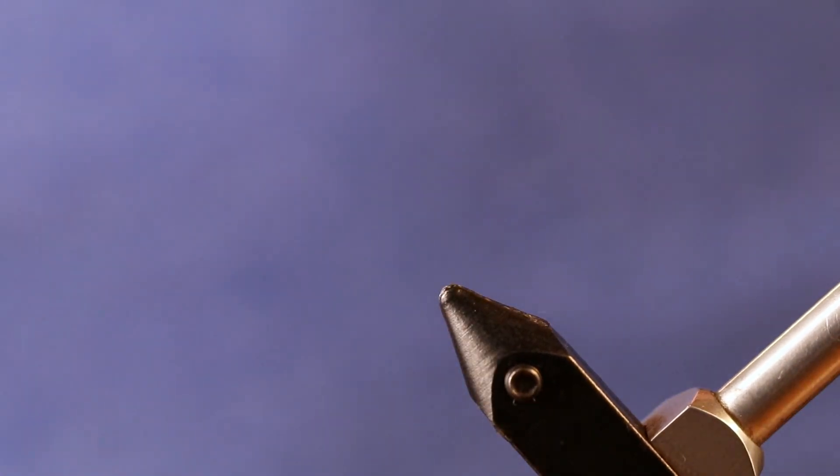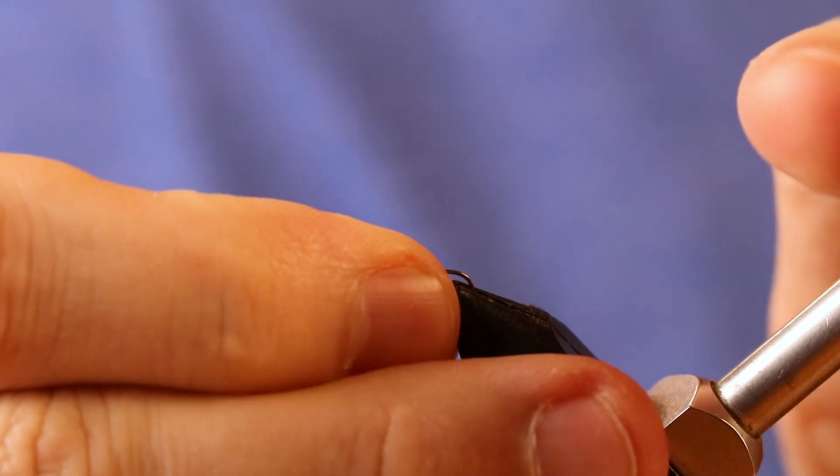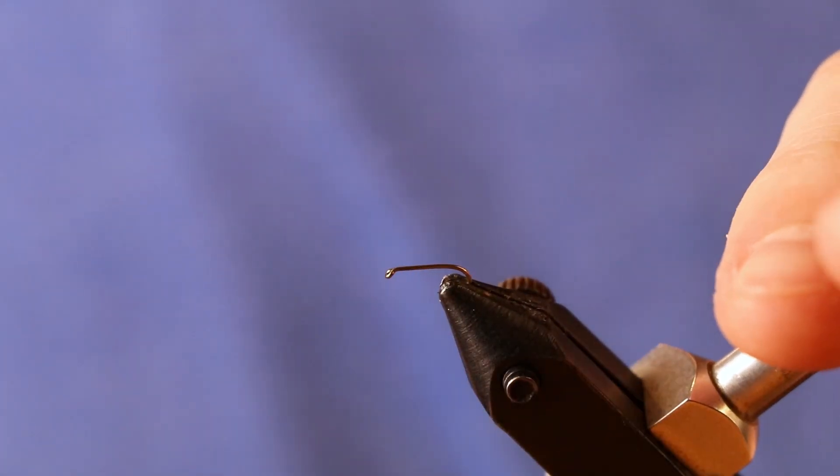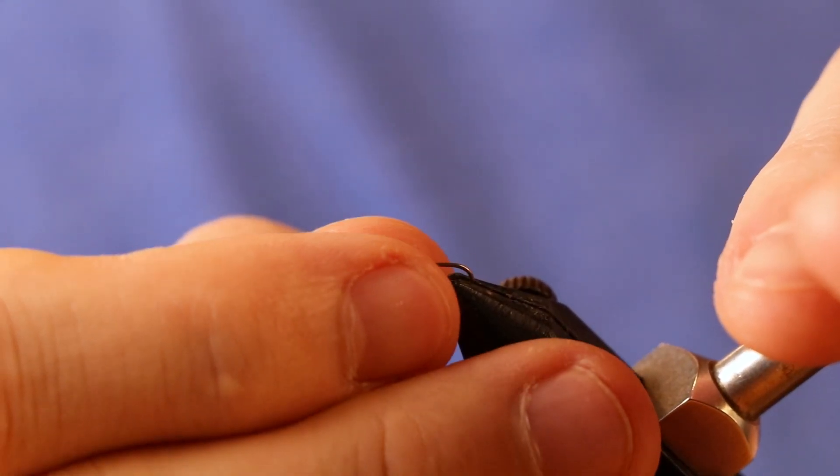To get started, I'm going to put a hook in my vise. This is a Tiemco 100 in a size 20. This is a dry fly hook. Some people tie this on the 101, which is totally fine as well.